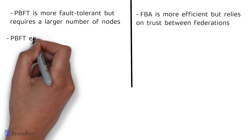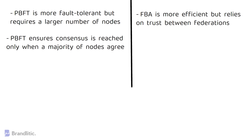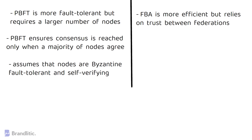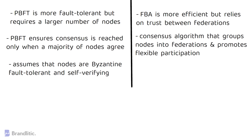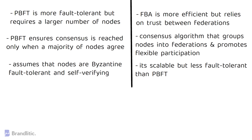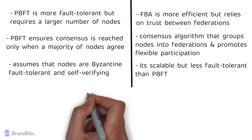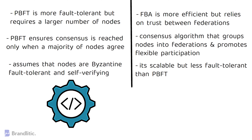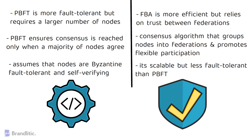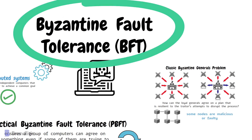PBFT is an algorithm that ensures consensus is reached only when a majority of nodes agree, and it assumes that nodes are Byzantine fault-tolerant and self-verifying. FBA, on the other hand, groups nodes into federations and allows for more flexible participation in the consensus process — it's scalable but less fault-tolerant than PBFT. Both PBFT and FBA have their pros and cons, and their suitability depends on the specific requirements of the distributed system. They are critical tools for ensuring the security and reliability of distributed systems in a world where malicious actors are increasingly common.